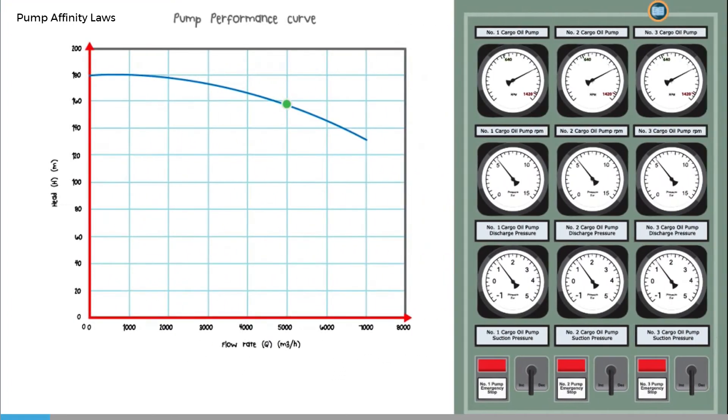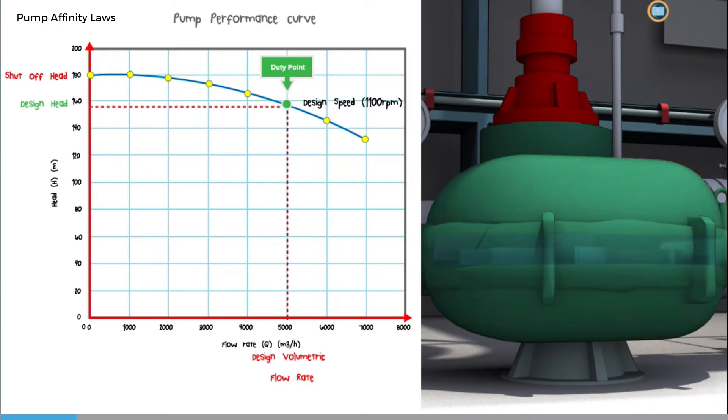Now let's take a look at how a centrifugal pump develops head and flow at various speeds. As we described earlier, the pump manufacturer will provide a performance curve for a centrifugal pump, but these are typically shown only for the design speed and when using fresh water.